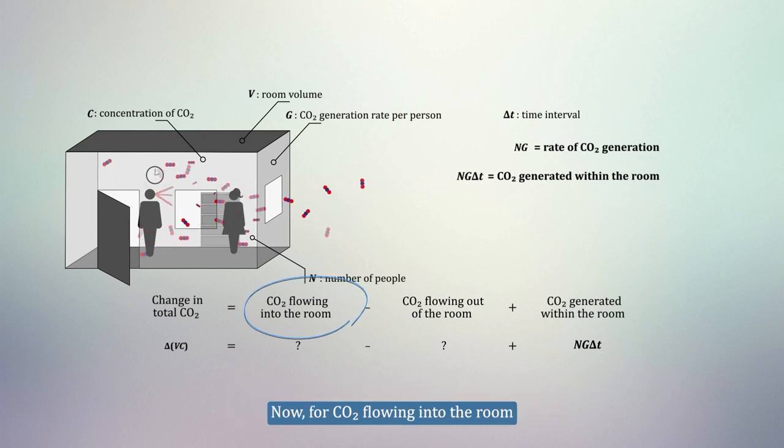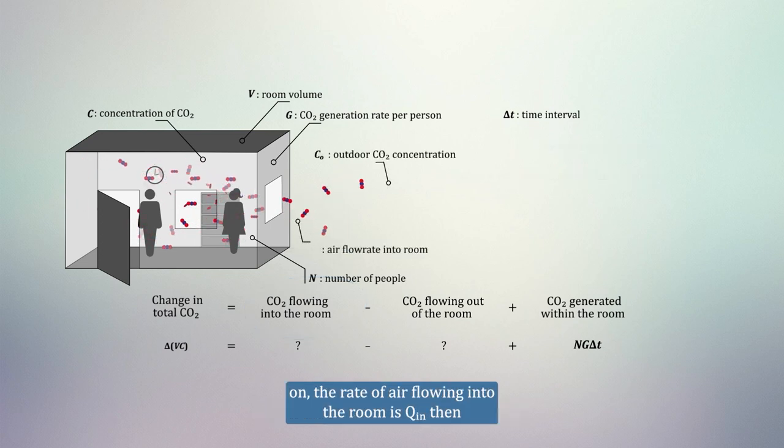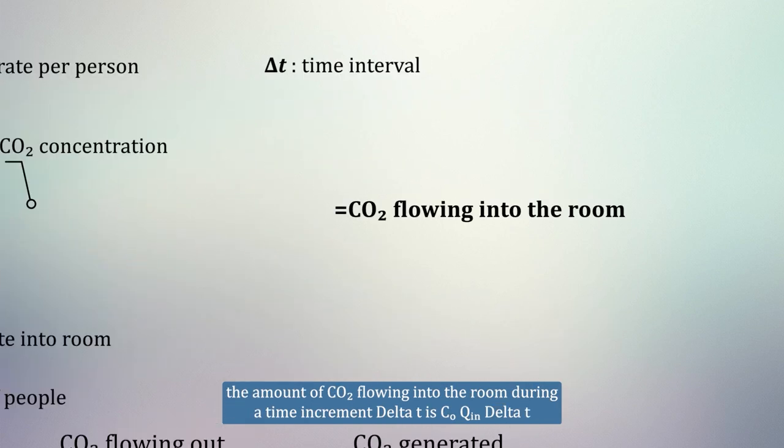Now, for CO2 flowing into the room. If the CO2 concentration outside is CO and the rate of air flowing into the room is Q in, then the amount of CO2 flowing into the room during a time increment delta T is CO Q in delta T.